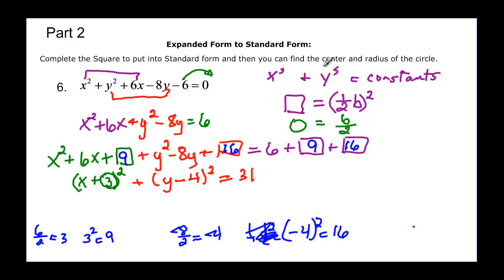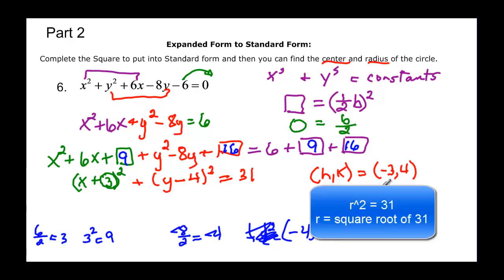Then it says find the center and the radius. So hk is equal to, if it's x plus 3 that means it was a negative 3 that we subtracted. And then the radius is equal to 31, but that's radius squared so I have to take the square root. And we have the square root of 31.